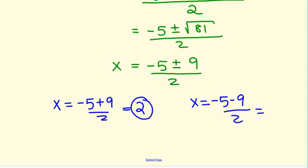And then come over to the second equation. Negative 5 minus 9 is negative 14. Divided by 2 is negative 7.